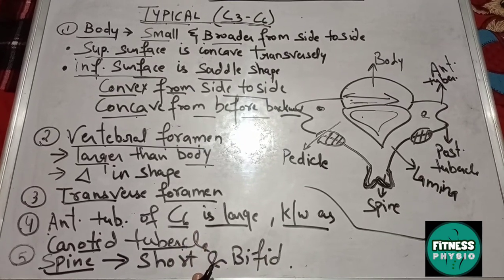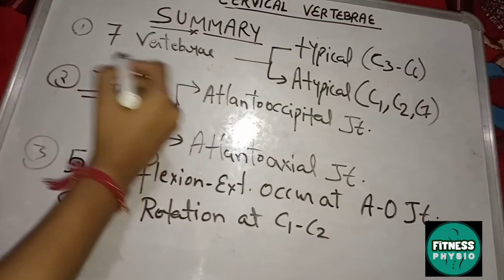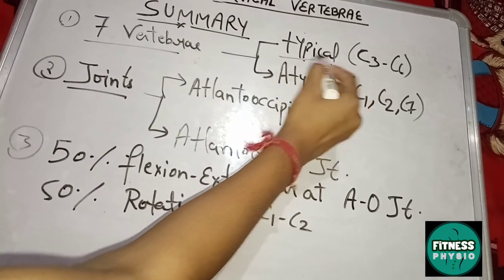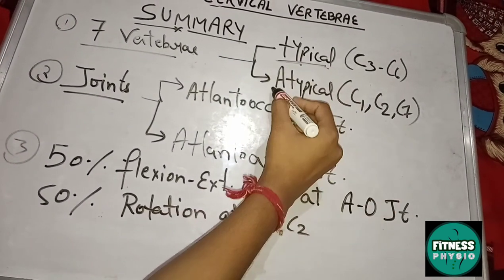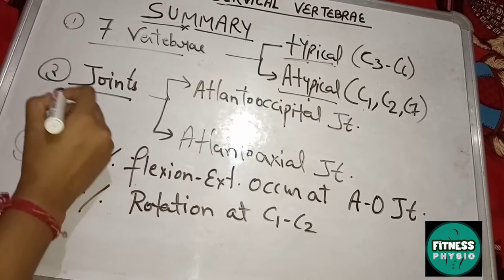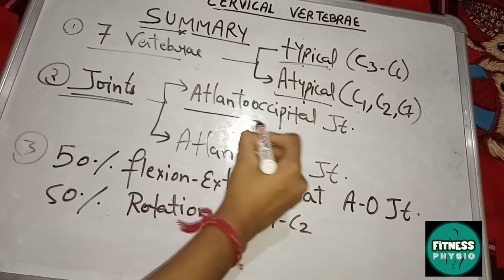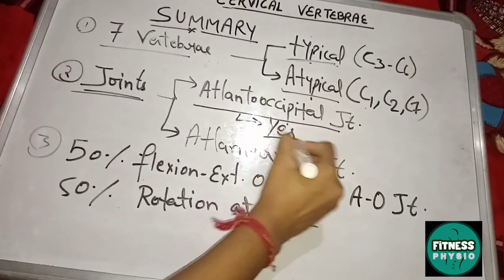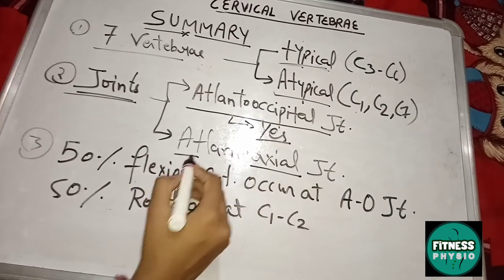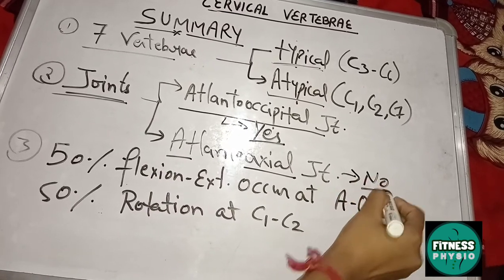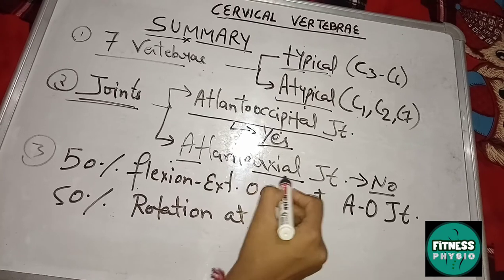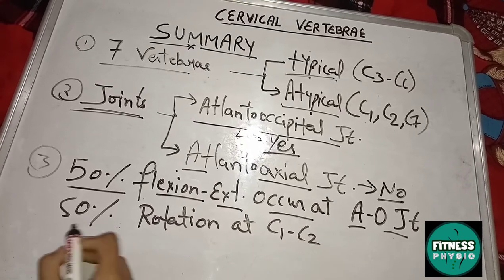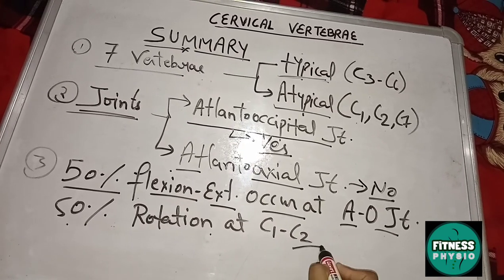In summary, there are seven cervical vertebrae: C3 to C6 are typical, and C1, C2, and C7 are atypical. Two main joints are present: the atlanto-occipital joint, which allows the nodding 'yes' movement with 50% of flexion and extension, and the atlanto-axial joint, which allows the 'no' rotation movement, accounting for 50% of rotation at C1 and C2.